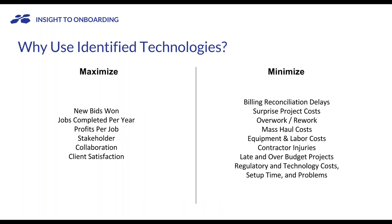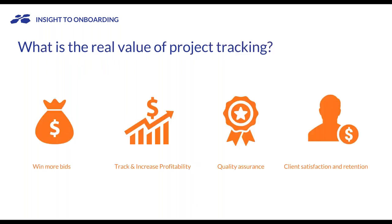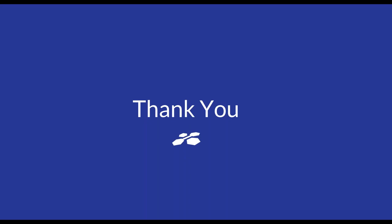We're really there to help you win more bids, complete more jobs per year, increase profits and collaboration per job, and keep stakeholders and clients happy. We help minimize billing reconciliation delays — now you know progress made that day instead of billing a month behind. We cut down on surprise project costs, overwork and rework, mass haul costs, equipment and labor costs, injuries, late and over-budget projects, regulatory costs, and setup time. Big picture: we help you win more bids, track and increase profitability, improve quality assurance, and retain and satisfy your clients.